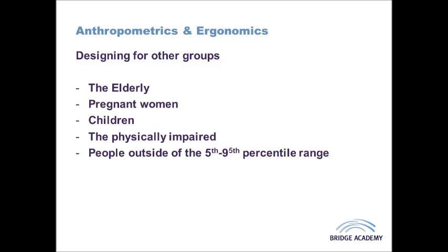In most cases we design for people within the normal range, but even within that range we have to consider the product itself. For example, when designing a door, we wouldn't want to use the 50th percentile, because anyone above about five foot ten would have to stoop to pass through. Similarly, when designing a chair, smaller people might have difficulty raising themselves to sit comfortably. So we look at the mean range between the 5th and 95th percentile, bearing in mind that most people fall into that 50th percentile middle category.